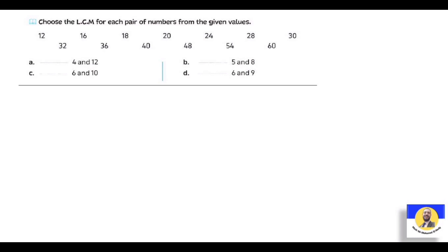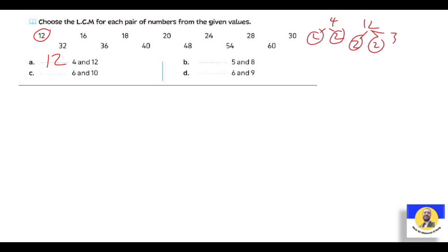Choose the least common multiple for each pair of numbers from the given values. لو معنا 4 and 12: هتلاقي الـ four هي 2 × 2، والـ twelve هي 4 × 3 = 2 × 2 × 3. الـ 2 with 2 repeated، يبقى الـ answer: 4 × 3 = twelve. طيب الـ five and eight: there is no relation between them - five is prime and eight is 2 × 2 × 2. مفيش حاجة repeating بينهم، يبقى الـ answer = 5 × 8 = forty.